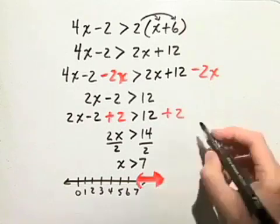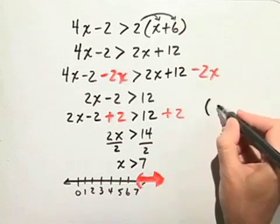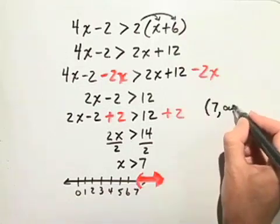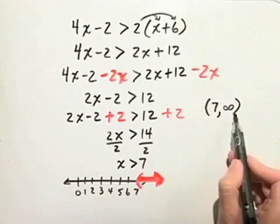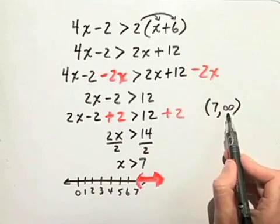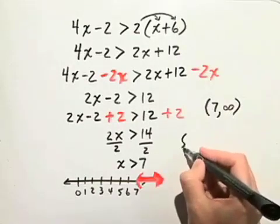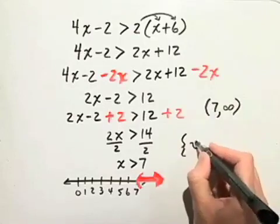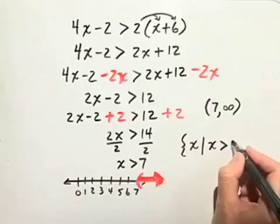We can write our solution in interval notation as the interval from 7 to positive infinity. Remember to always put parenthesis when you're using infinity in interval notation. We can write our answer in set builder notation as the set of all x such that x is greater than 7.